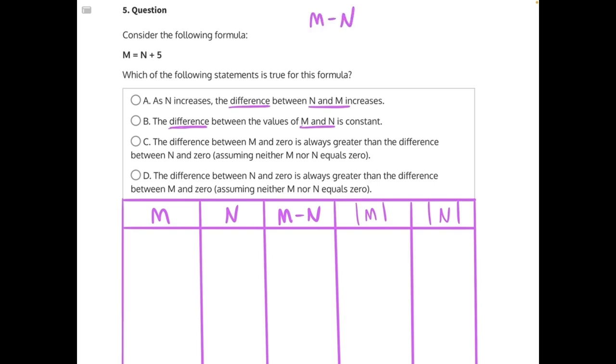When you do this, M is equal to N plus 5, so you can substitute N plus 5 in for M and then solve, now that we have one variable in the expression.